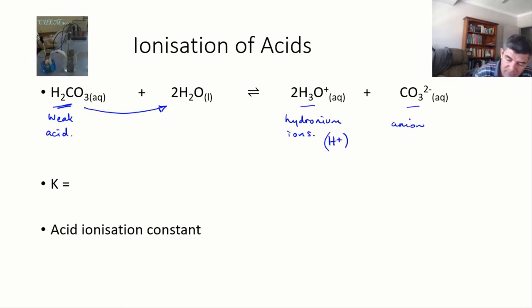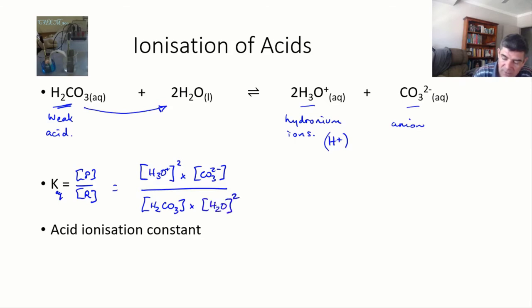The expression for the equilibrium constant, as always, is products, concentration of products over concentration of reactants. Therefore, in this case, we would have our H3O+ raised to the power of 2 multiplied by our concentration of CO3²⁻. And that's our products and our reactants, concentration of H2CO3 multiplied by water, which, because there's a 2 in front, we would raise to the power of 2.